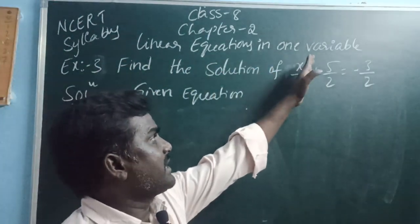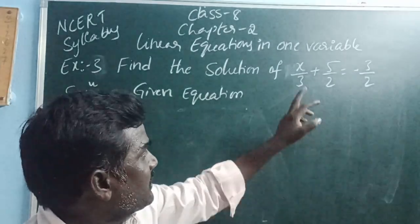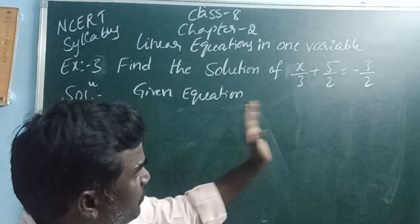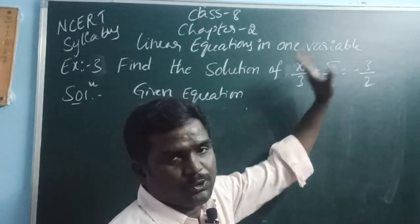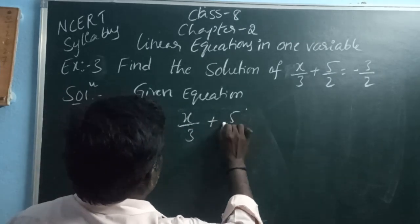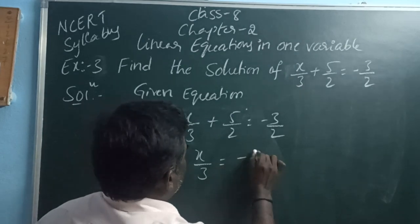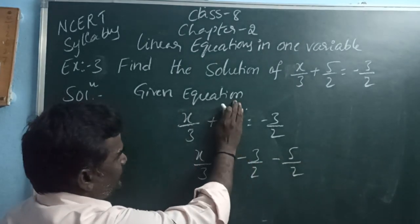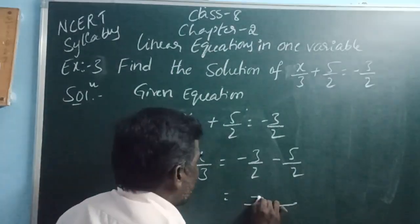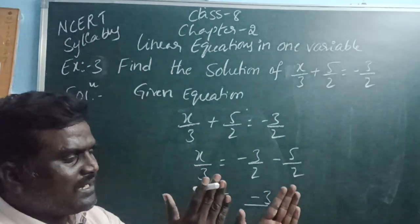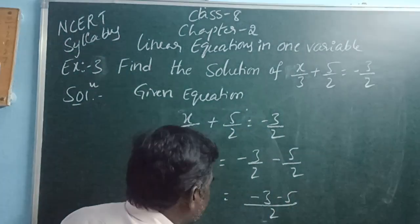Example 3: Find the solution of x by 3 plus 5 by 2 equals minus 3 by 2. The variable here is x. We want the x variable alone, so we neglect each constant one by one. First, move plus 5 by 2 to the right side. So x by 3 is equal to minus 3 by 2 minus 5 by 2. These are like fractions with common denominator 2. Minus 3 minus 5 equals minus 8. So x by 3 equals minus 8 by 2, which simplifies to minus 4.